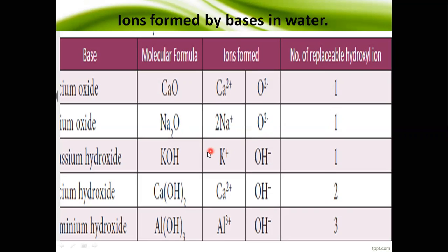Just as acids give hydrogen ions, bases give hydroxyl ions — that is the difference between acids and bases. Bases are classified in different ways, same as acids: based on acidity, concentration, and ionization.